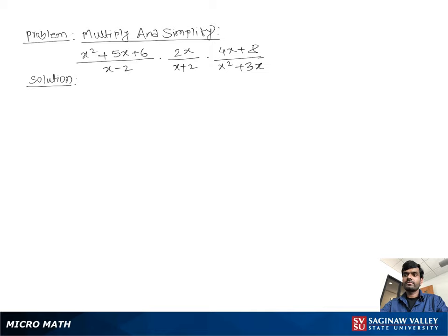Multiply and simplify (x² + 5x + 6) / (x - 2) times 2x / (x + 2) times (4x + 8) / (x² + 3x). We multiply top to top and bottom to bottom, so write: